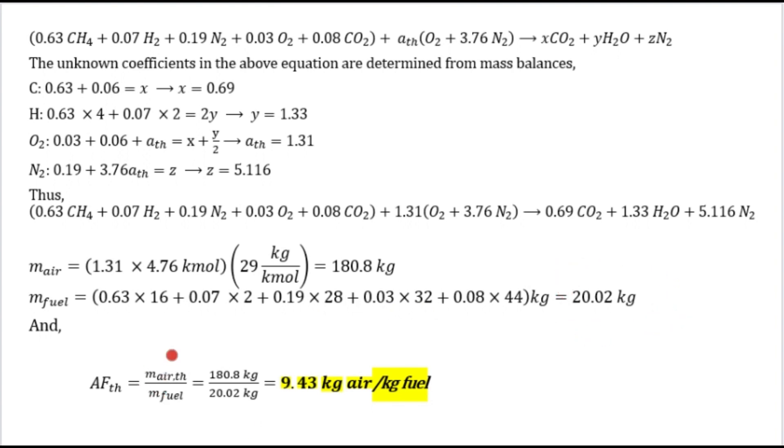This is the formula we're going to use to find the air-fuel ratio: m_air over m_fuel. So 180.8 kg over 20.02 kg, and the final answer is 9.43 kg air per kilogram fuel. Thanks so much for listening.